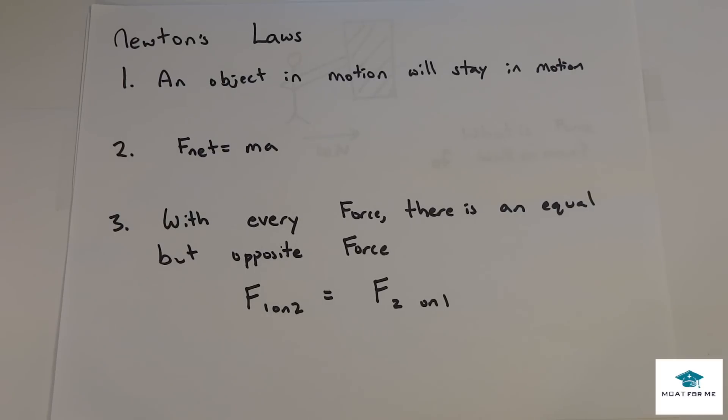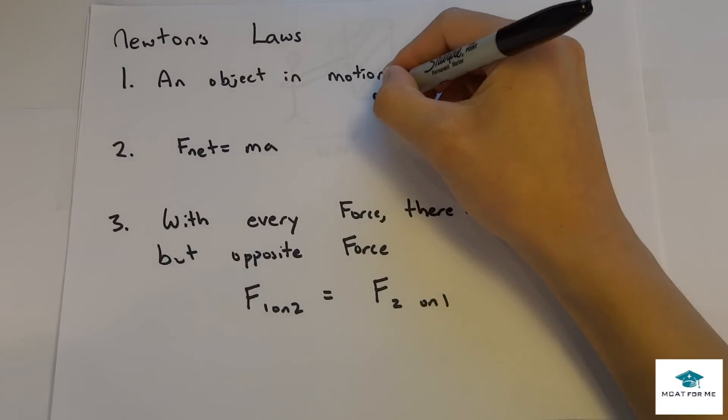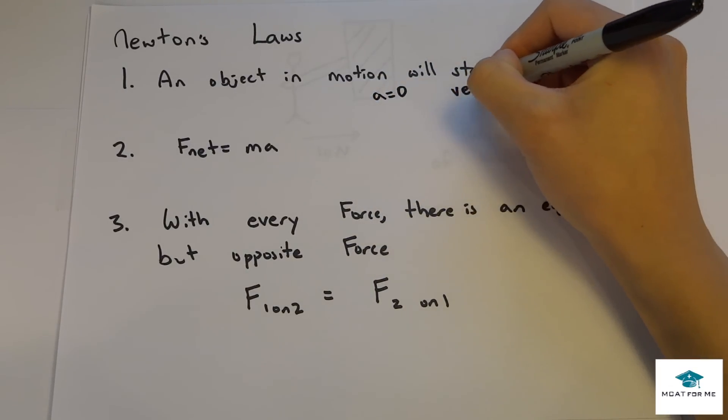So the first thing we're going to look at are Newton's three laws. The first one says an object in motion will stay in motion. So that says if acceleration is zero, the velocity will be constant.